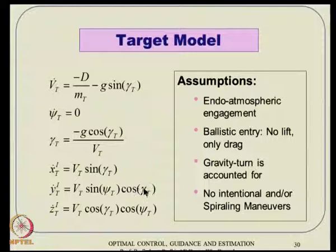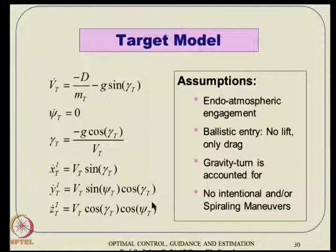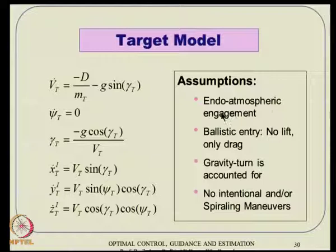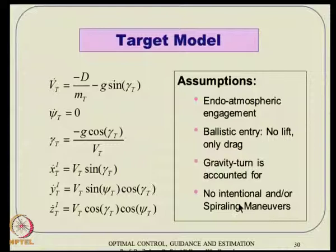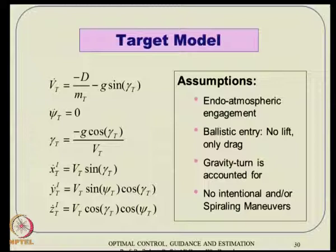The target model is a point mass model, since no sensors can currently provide six-DOF detail of target dynamics. Point mass level information is sufficient and available. The point mass model has three dynamic and three kinematic components in 3D. Assumptions for the target: endo-atmospheric engagement, ballistic re-entry (no lift, only drag), gravity turn accounted for, and no intentional or unintentional spiraling maneuvers.